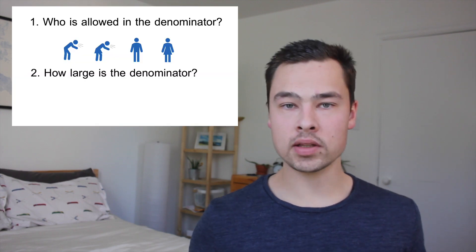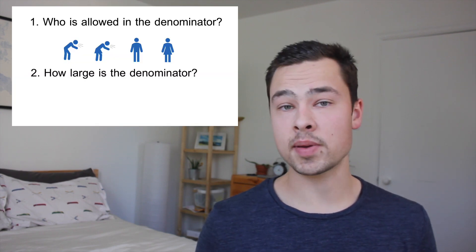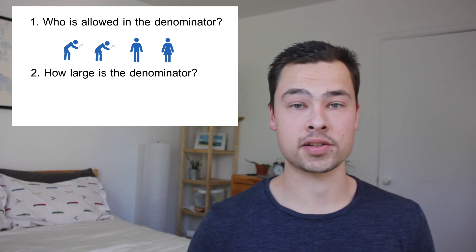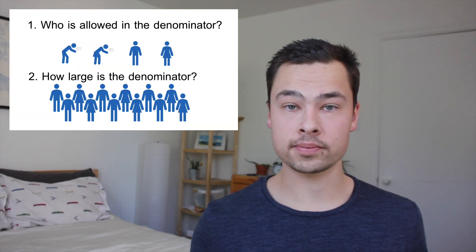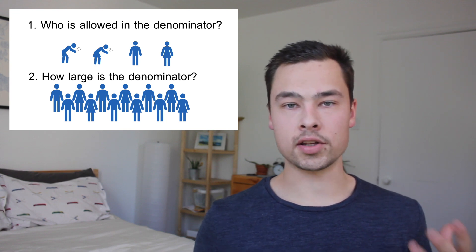So let's apply these questions to two different testing scenarios. First, a scenario where we have a lot of tests and very few restrictions on who can get tested. In that scenario, the denominator includes anyone that wants to get tested, including those people that very likely won't test positive for COVID-19. But question number two asks how big that denominator is, and in this scenario the denominator is very large. Because the denominator is so large, you're going to catch almost every single positive case through your testing alone.